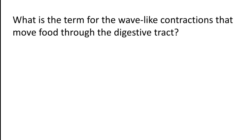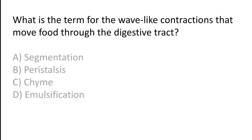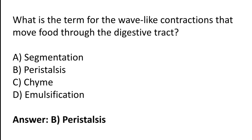What is the term for the wave-like contractions that move food through the digestive tract? Option A: Segmentation. Option B: Peristalsis. Option C: Chewing. Option D: Emulsification. The correct answer is Option B — peristalsis is the term for the wave-like contractions that move food through the digestive tract.